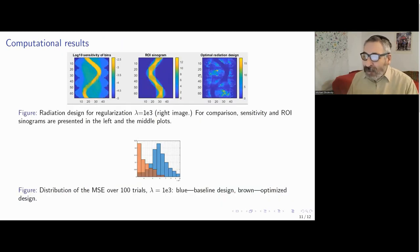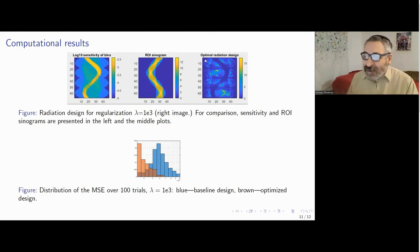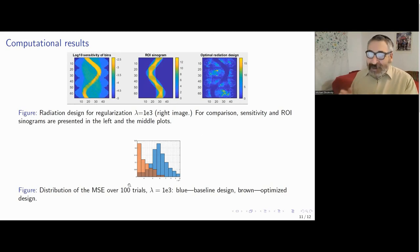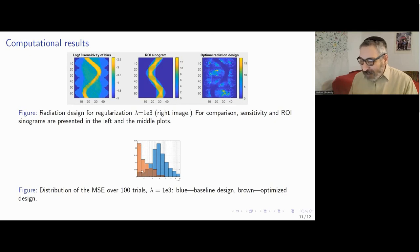Here is our optimal radiation plan. Every pixel in this sinogram-space picture corresponds to one projection ray. Comparing with the bin sensitivity map, the optimal plan minimizes the number of photons sent to sensitive areas while sending slightly more to the region of interest we want to reconstruct. We ran 100 simulation trials and plot a histogram of mean squared errors. The typical errors under optimal design are significantly smaller than under the standard uniform design.